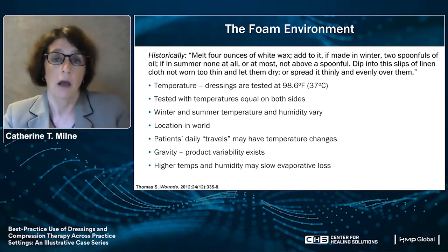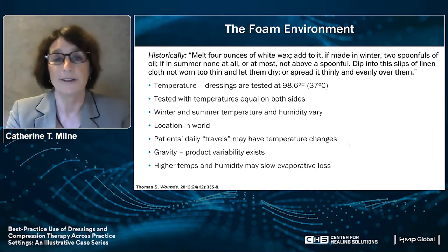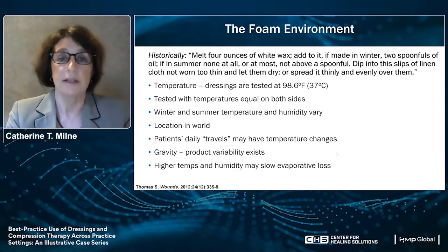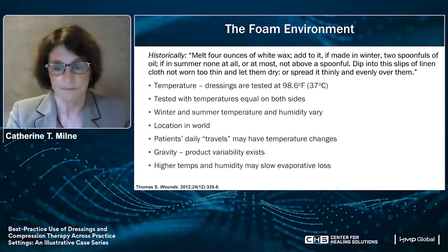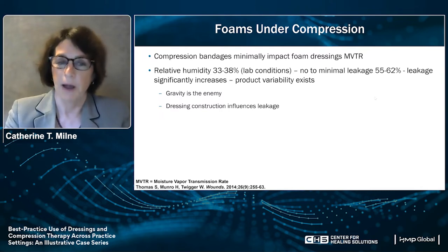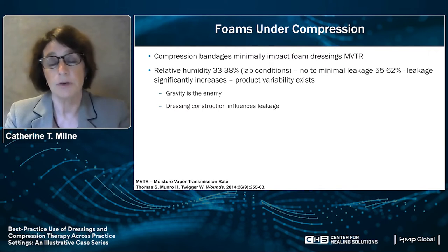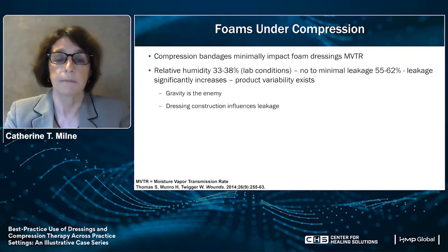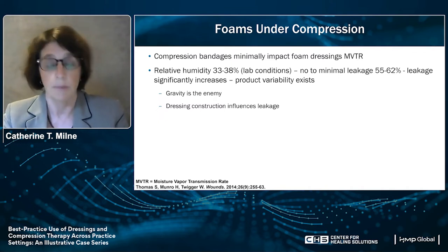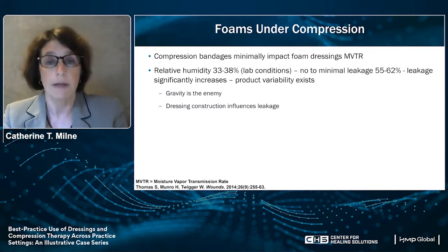A patient's daily temperatures may change — for example, the wound clinic may be 62°F and then you travel to a nursing home at 80 to 85°F. We also have to think about gravity. If a patient's legs are down, there will be variability. Foams do minimally impact the moisture vapor transmission rate in lab conditions, where relative humidity is between 33 and 38%. When humidity increases to 55 to 62%, leakage will increase. Gravity is always your enemy, and how a dressing is constructed will influence exudate leakage.